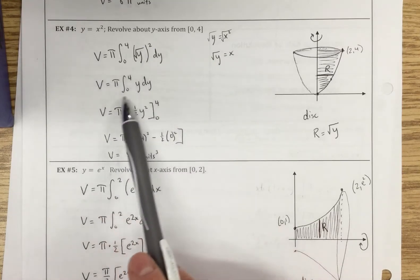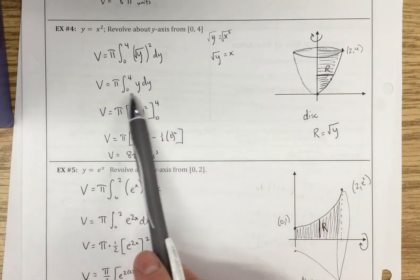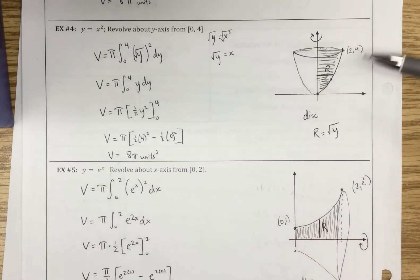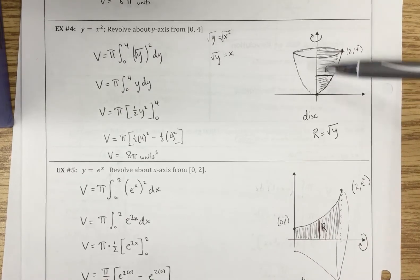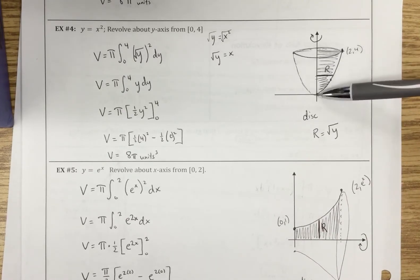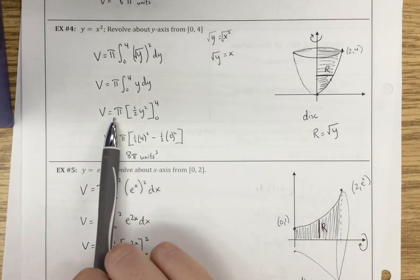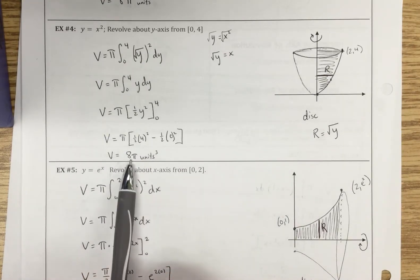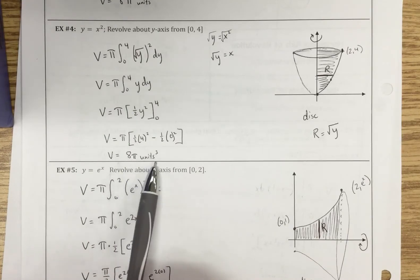When you simplify it down, you end up here and we're just integrating y dy. Remember our bounds are dependent on the y value because we're doing this with respect to y. And when we get down here, you should end up with 8 pi units cubed as your final volume.